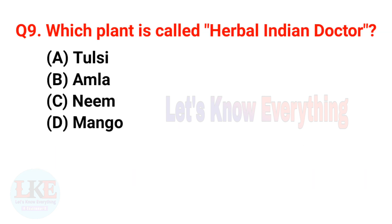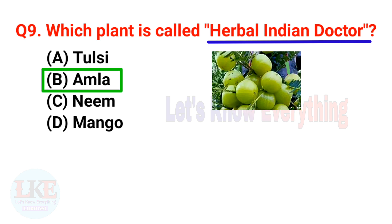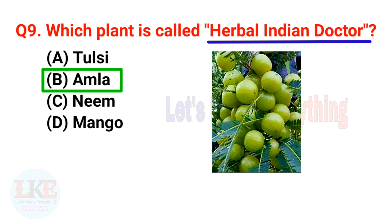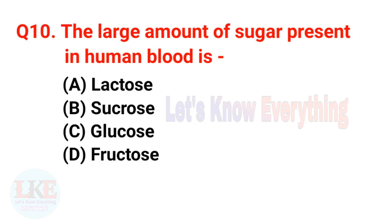Question 9: Which plant is called the herbal Indian doctor? A) Tulsi, B) Amla, C) Neem, D) Mango. The right answer is option B, Amla. Amla is called the herbal Indian doctor because it is used to cure many diseases naturally. Question 10: The large amount of sugar present in human blood is glucose. Glucose is the main sugar found in our blood.